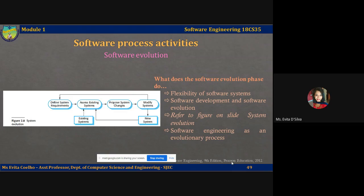Once a decision has been made to manufacture hardware, it is expensive to make changes to the hardware design. However, changes can be made to the software at any time during or after the system development. Even extensive changes are still much, much cheaper than corresponding changes to the system hardware.